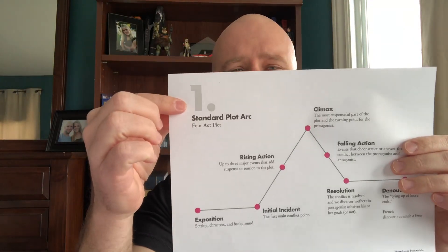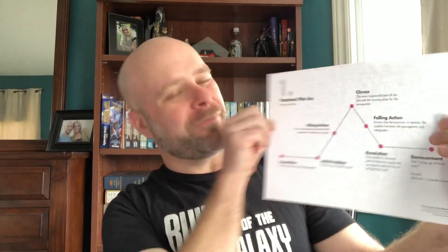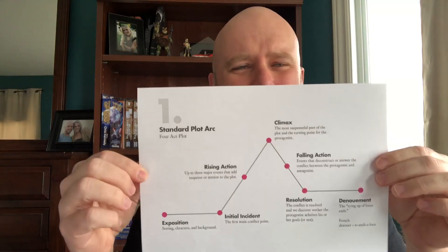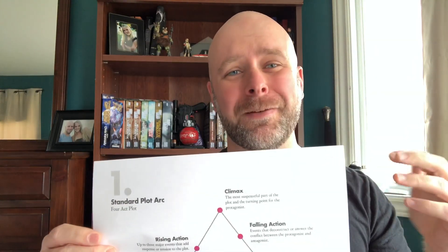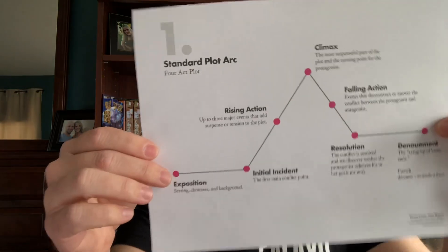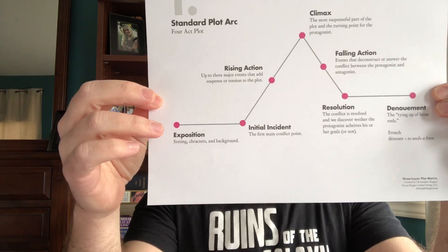The first page of the handout has a big number one in the upper left-hand side and it says: Standard Plot Arc, the four-act play. This is the very first layer. You've probably seen this before — you can find it on the internet, your teacher has probably gone over it — and it really is the basic best guide for how you write a four-act play, movie, story, whatever you're going for. The very first thing you'll see is the exposition, which is the setting, characters, and background — essentially the setup.